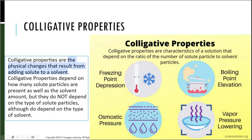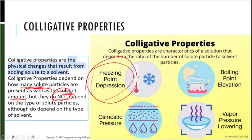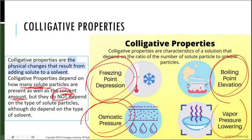Colligative properties depend on how many solute particles are present as well as the solvent amount, but they do not depend on the type of solute particles, although they do depend on the type of solvent. Some colligative properties that we are going to investigate further include freezing point depression, boiling point elevation, osmotic pressure, and vapor pressure lowering.